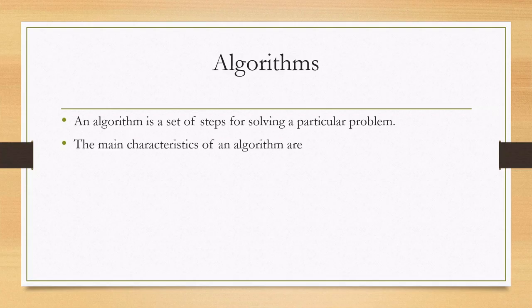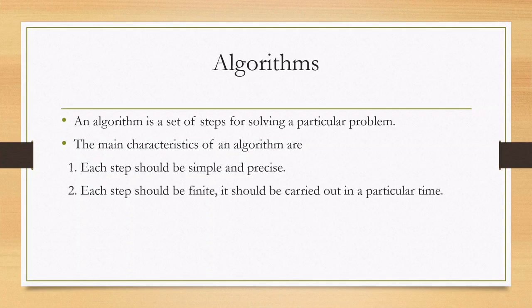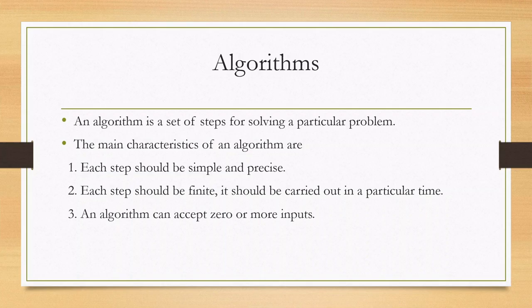The main characteristics of an algorithm are: first, each step should be simple and precise — that is, small steps. Second, each step should be finite, meaning it should be carried out in a particular time, so there is a limit to the time taken for executing a particular step. An algorithm can accept zero or more inputs, and it should produce the desired output.